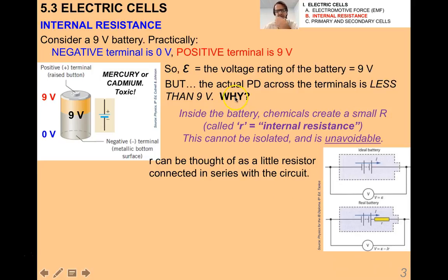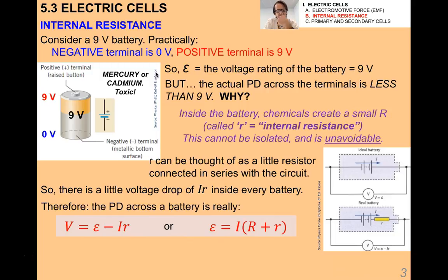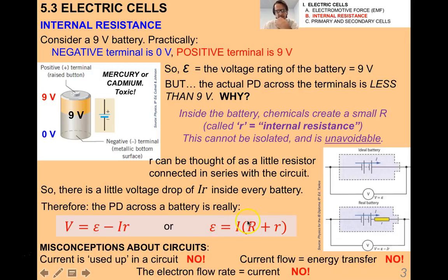The chemicals inside traditional batteries are mercury or cadmium, and these are toxic. There's a movement nowadays to make cleaner, more environmentally friendly batteries, but that technology has a ways to go. There's a little voltage drop of Ir inside every battery, so the actual potential difference across the battery is really the EMF minus that little voltage drop. Rearranging, you find that EMF equals I times the quantity (R + r), where R is the total resistance of the circuit. Don't fall into the trap of thinking that current can be used up in a circuit — current flow is not energy transfer necessarily, and the electron flow rate is not the current.